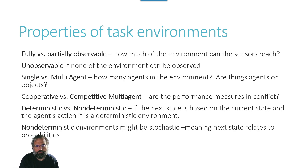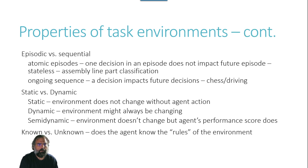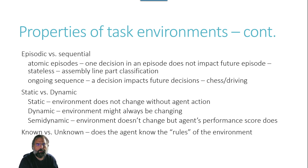Are the operations from one state to another deterministic or non-deterministic? That means: does the agent's decision-making process include some sort of randomness in what it's going to do? Non-deterministic environments might be stochastic, meaning the next step relates to probabilities rather than to some finite outcomes. Moving on, you may have episodic versus sequential — an atomic episode is one decision, and that episode doesn't have any impact on future episodes.